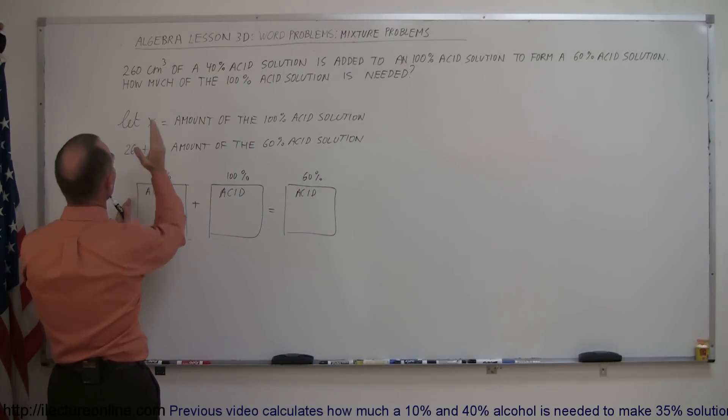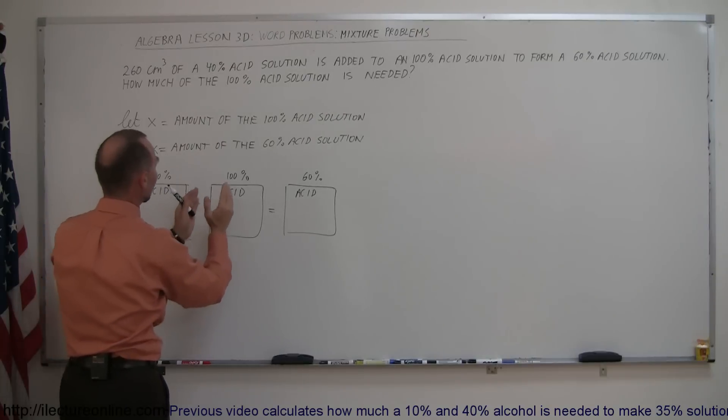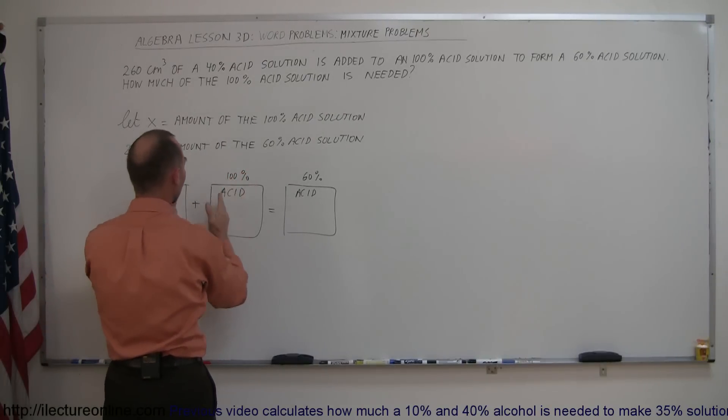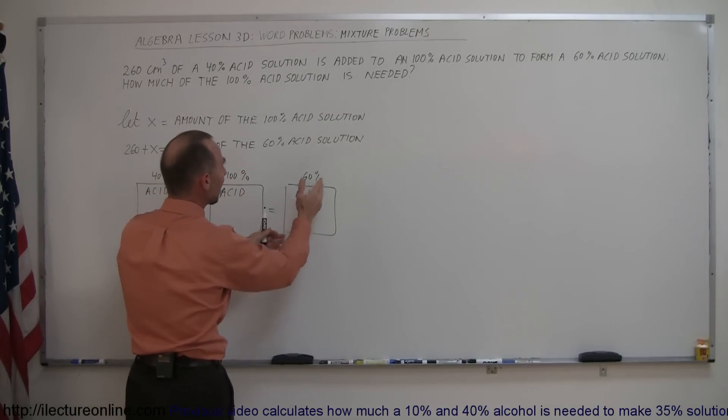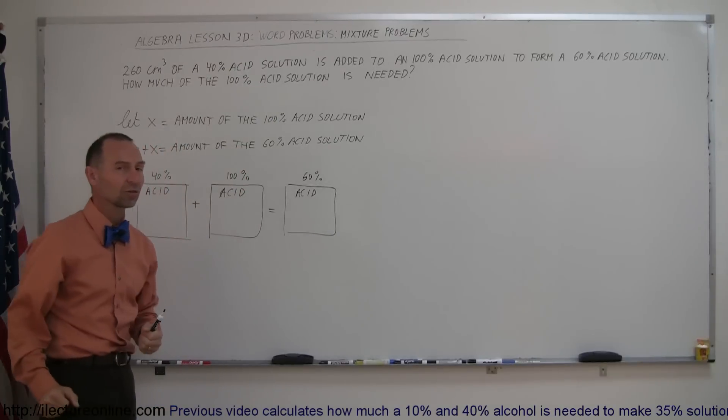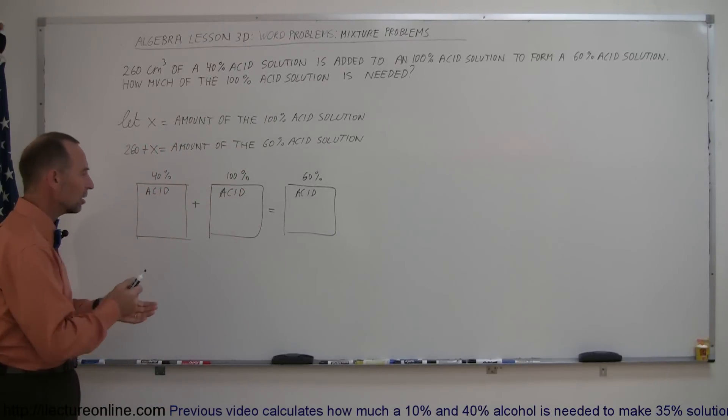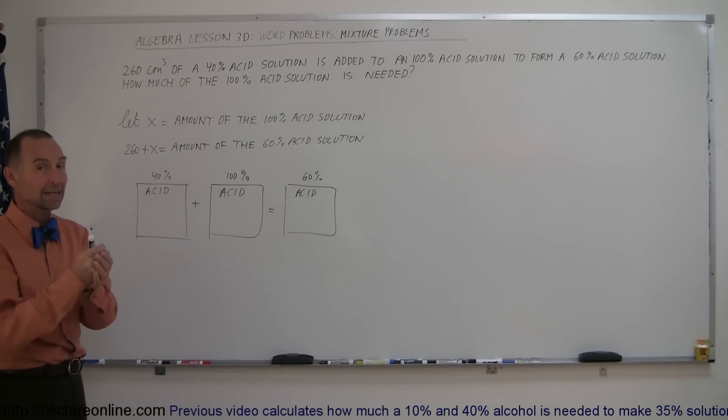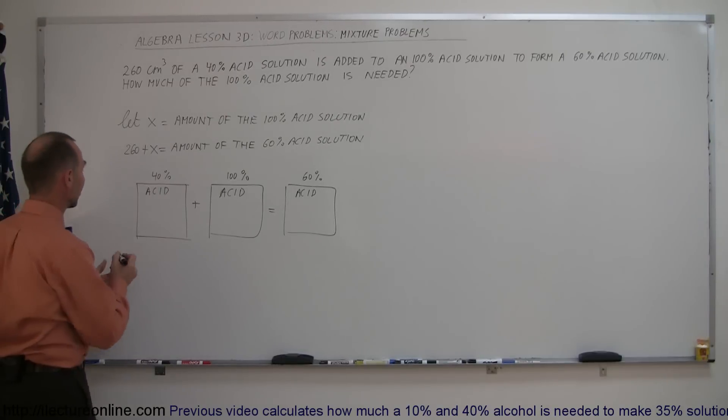However much acid you had in the 40% solution, plus how much acid you have in the 100% solution, together should add up to the amount of acid you have in the 60% solution. And how do you calculate the acid in each solution? You multiply the concentration times the amount that you have.